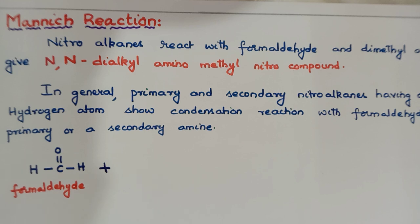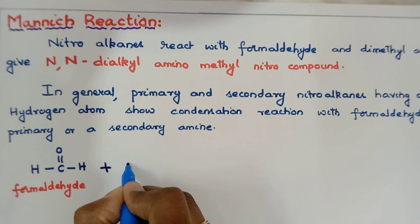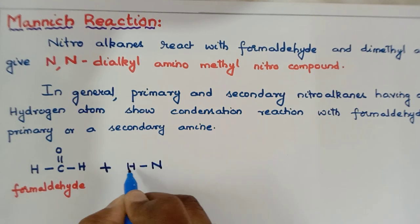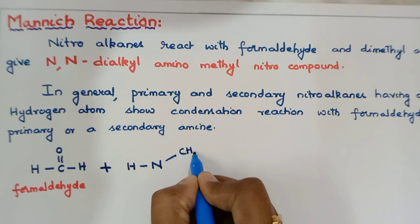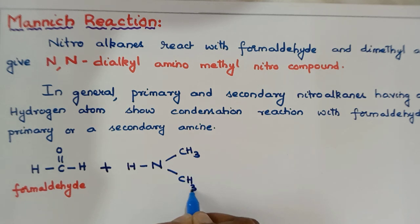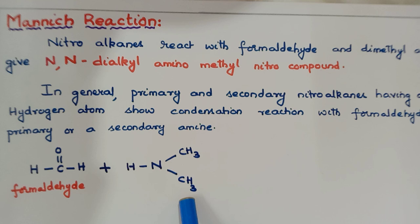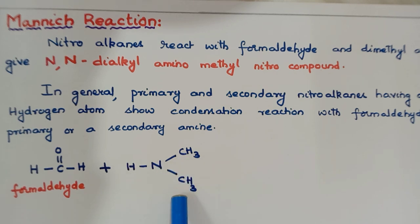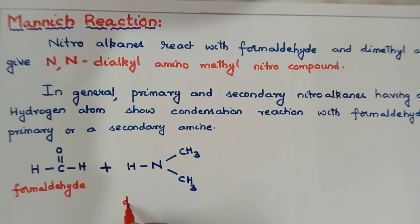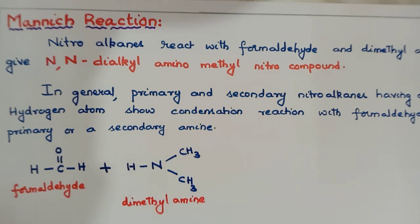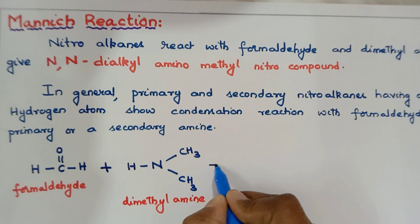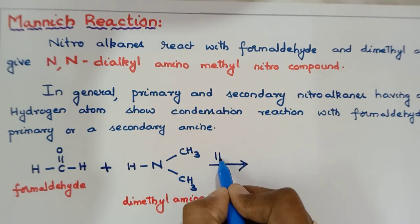Dimethylamine is a secondary amine. Its structure is N with one hydrogen and two CH3 groups — two methyl groups. Nitrogen has one hydrogen and two alkyl groups, hence it is a secondary amine. This reaction takes place in the presence of an acid, for example HCl.